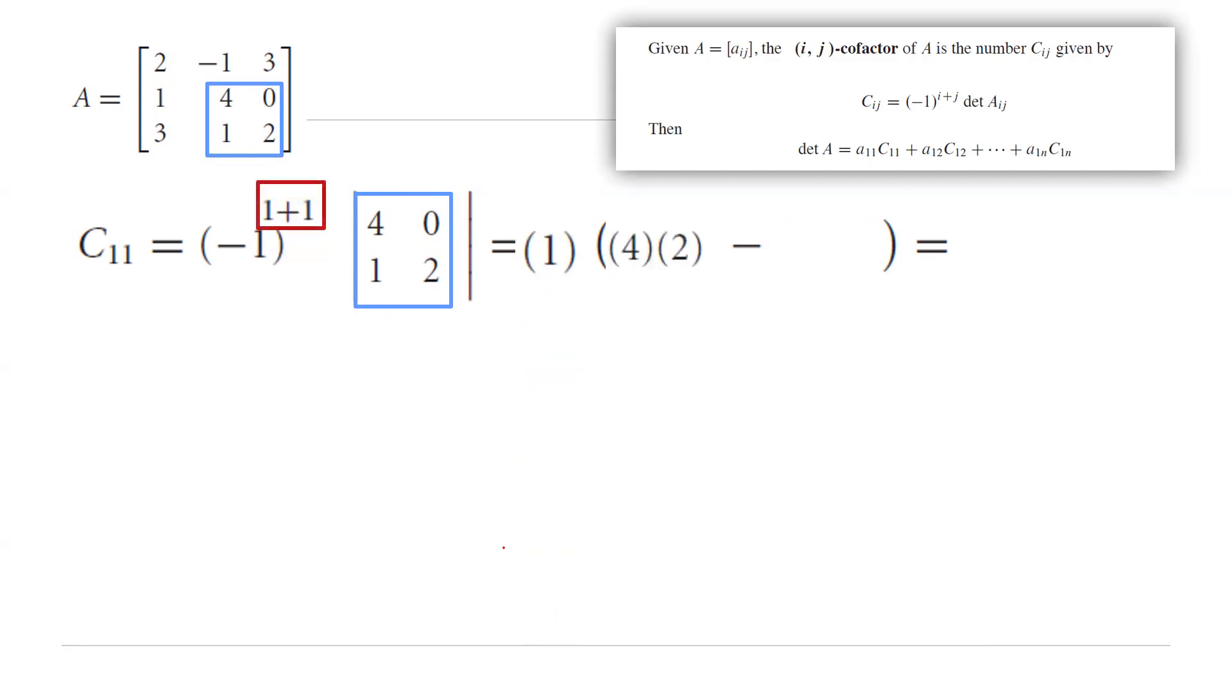So you get 1 times, as you remember how to calculate the determinant of 2 by 2 matrix, 4 times 2 minus 1 times 0. This c sub 1,1, or the cofactor, is 8.